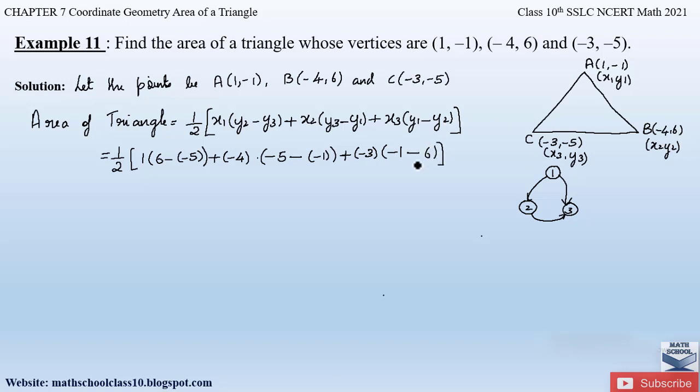So now let us first simplify the signs here so that we don't get confused. Half into we have 1 into (6 - (-5)). Minus into minus will become plus, so this will become 6 + 5. Then we have plus into -4, so what is minus into plus? It will become -4.